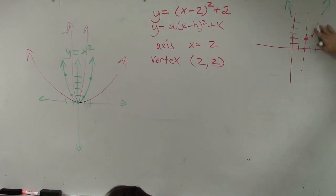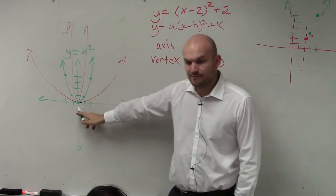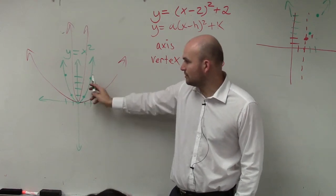Over 2. Oops. Over 2, up 4. Why did you go over 4? Because here's my parent graph. If you're doing a table of values for this, over 1, up 1. Over 2, up 4.